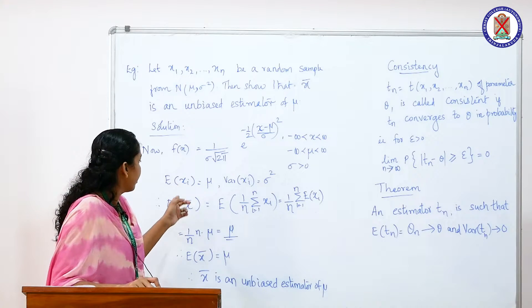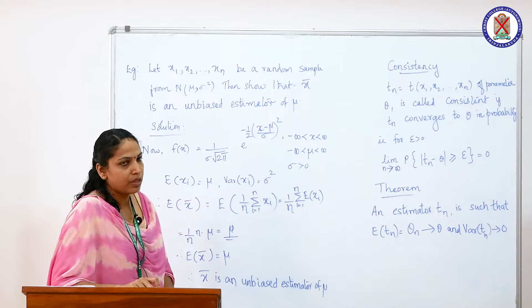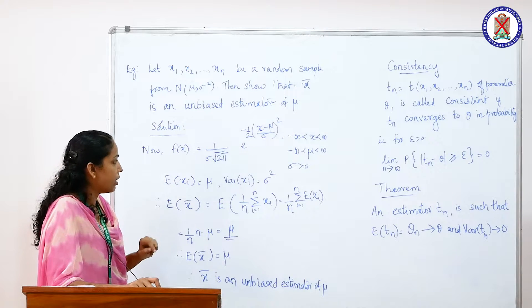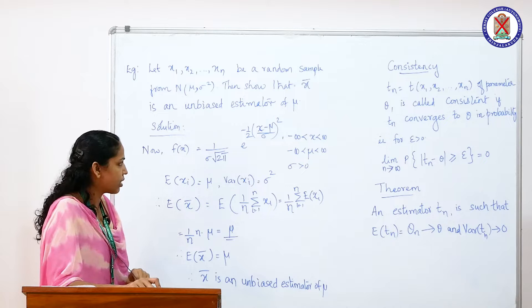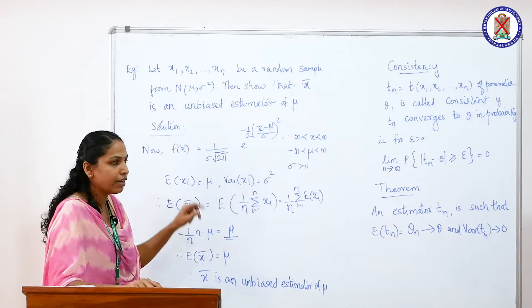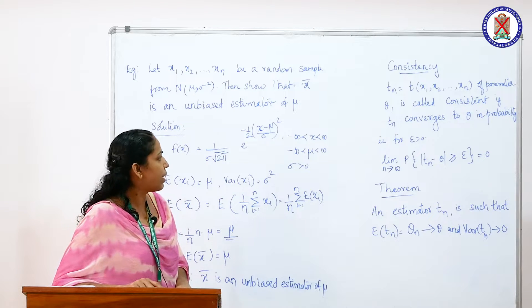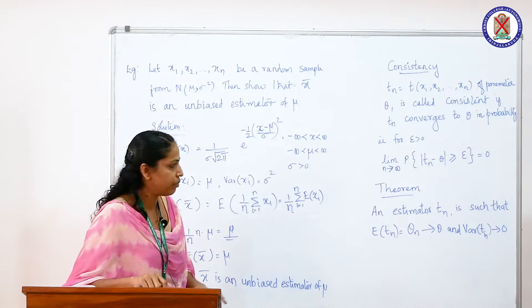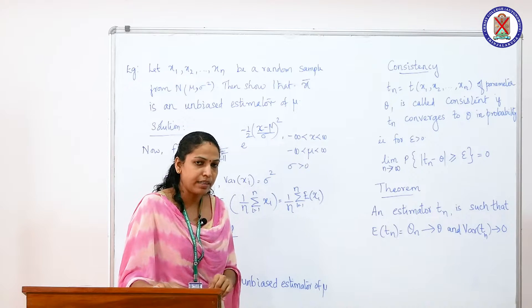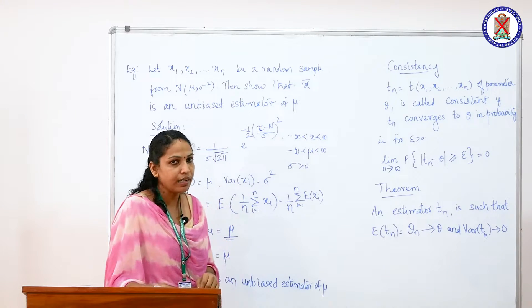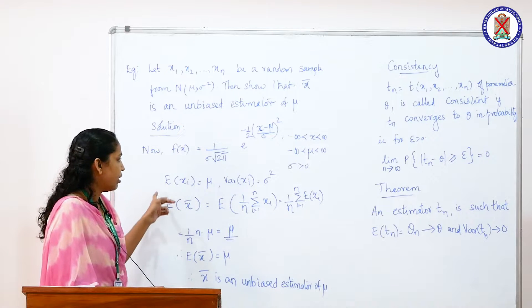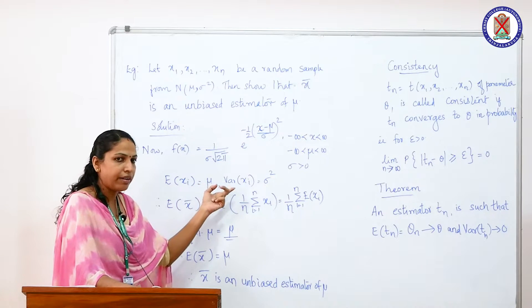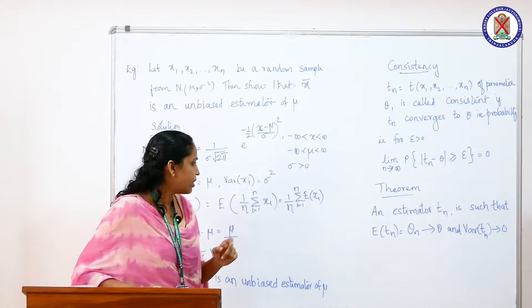For that, we have to find the mean of x bar. The PDF of the normal distribution is f(x) = (1 / (sigma * sqrt(2*pi))) * e^(-(1/2)*((x-mu)/sigma)^2), where x lies between minus infinity and plus infinity, mu lies between minus infinity and plus infinity, and sigma is always greater than 0. The expectation of a normal random variable is mu and the variance of a normal random variable is sigma square.